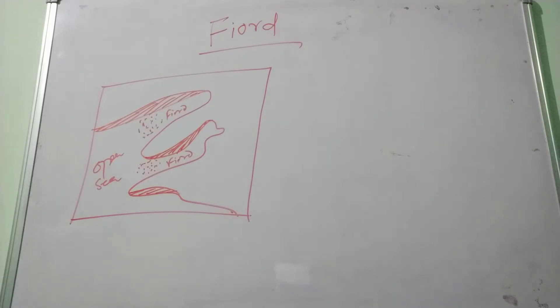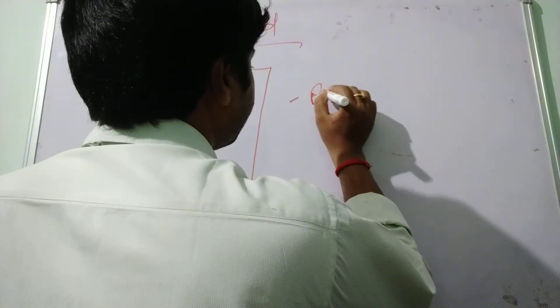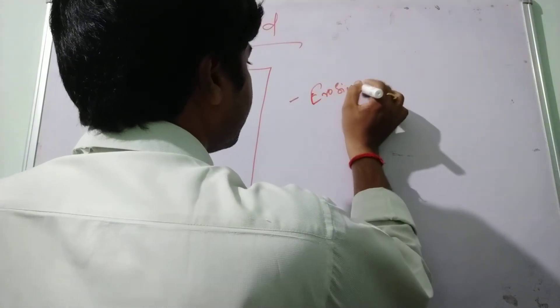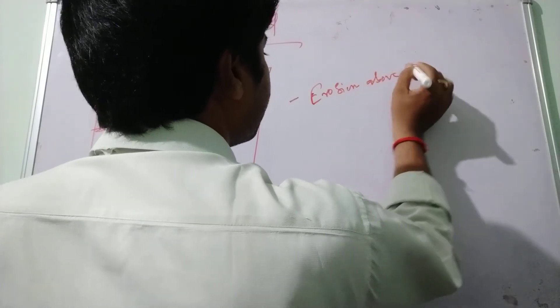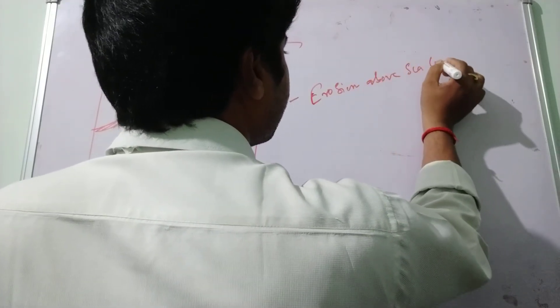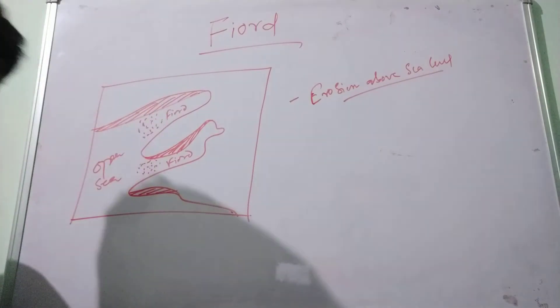First is the erosion above the soil. According to this concept, the fjords have been formed by the submergence of U-shaped valleys formed by the glaciers.